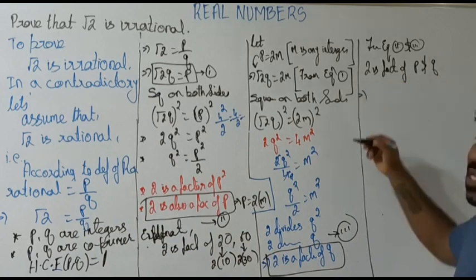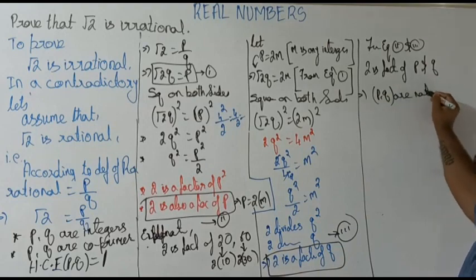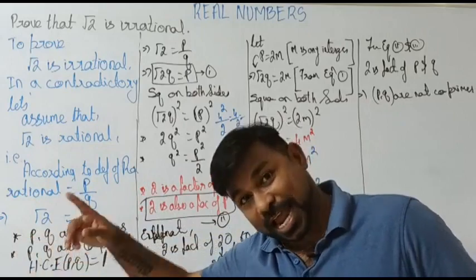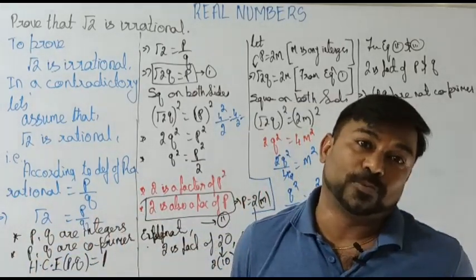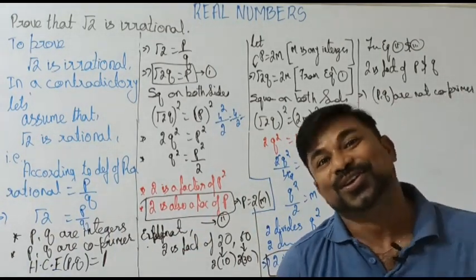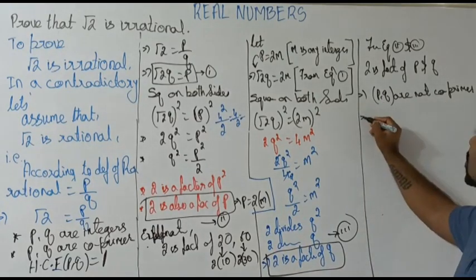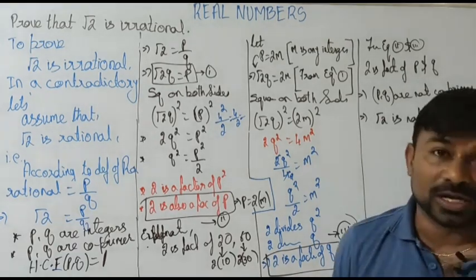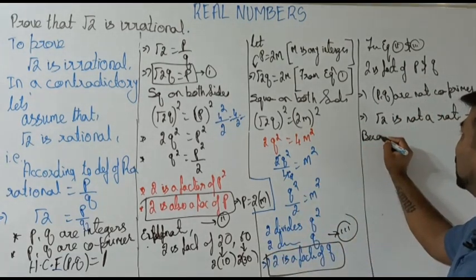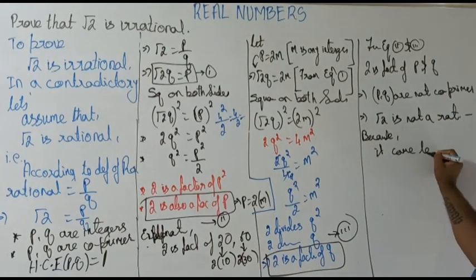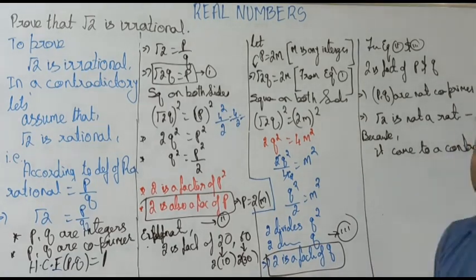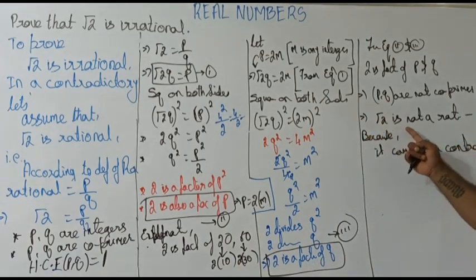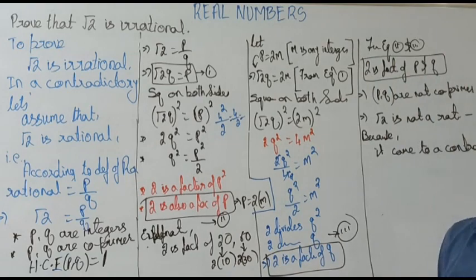If p and q are co-primes, the highest common factor should be only one. But we got 2 as the highest common factor of p and q. This means p and q are not co-primes. If root 2 is rational but p and q are not co-primes, it is against the rule — it came to a contradiction.